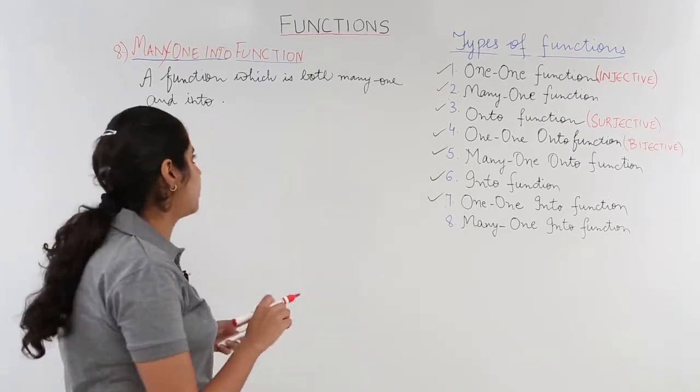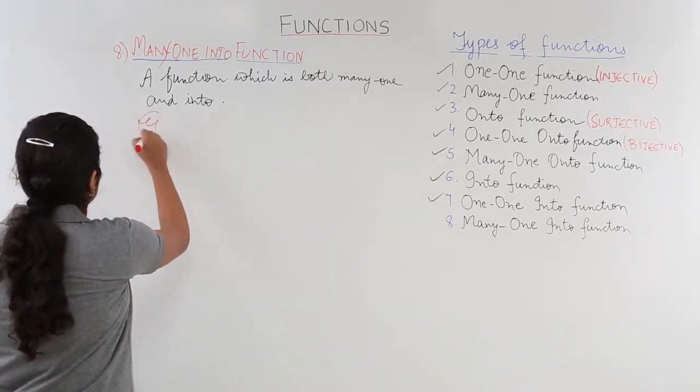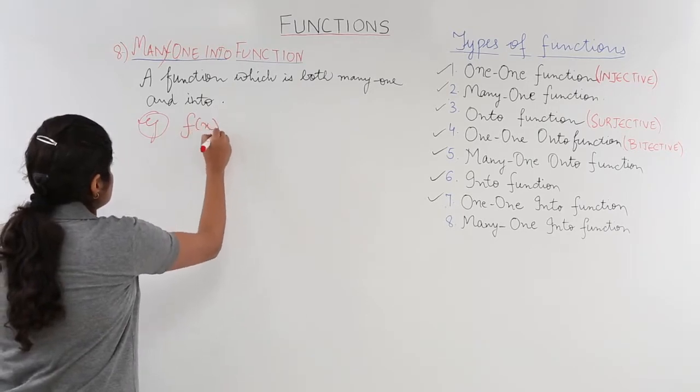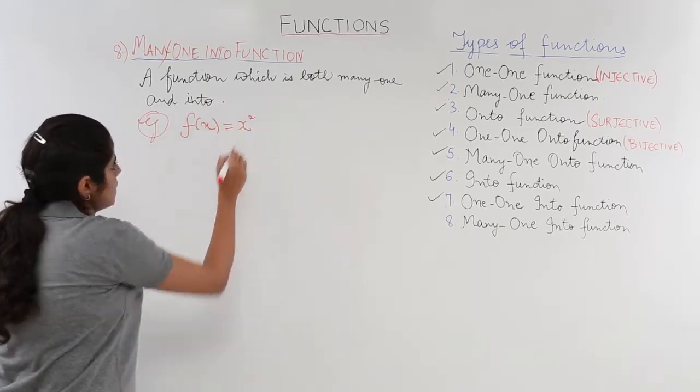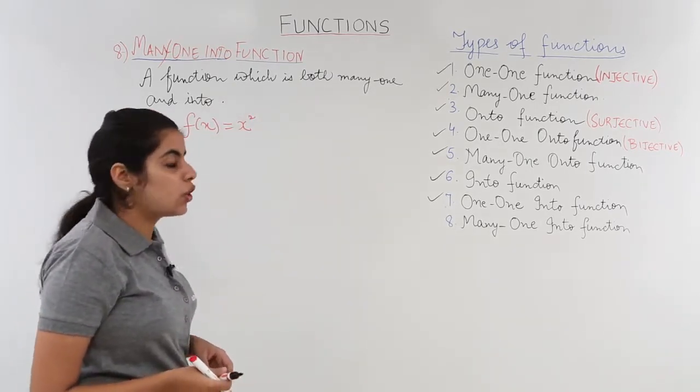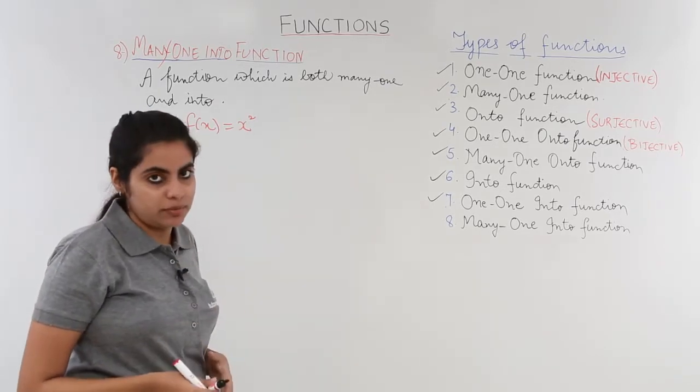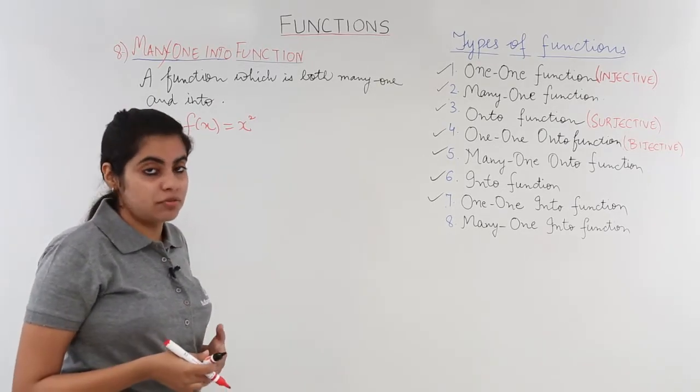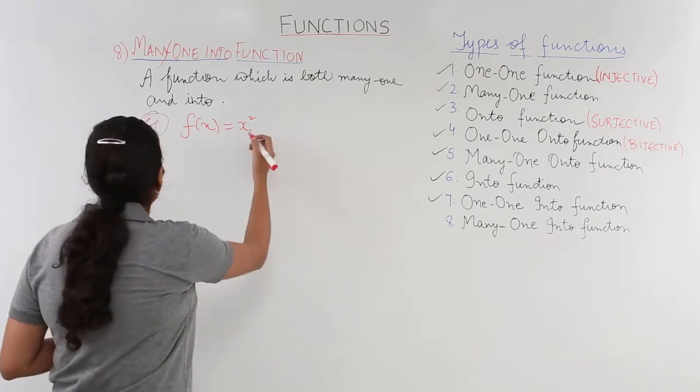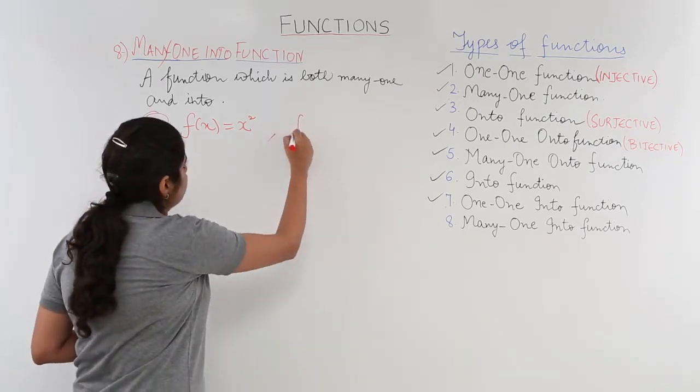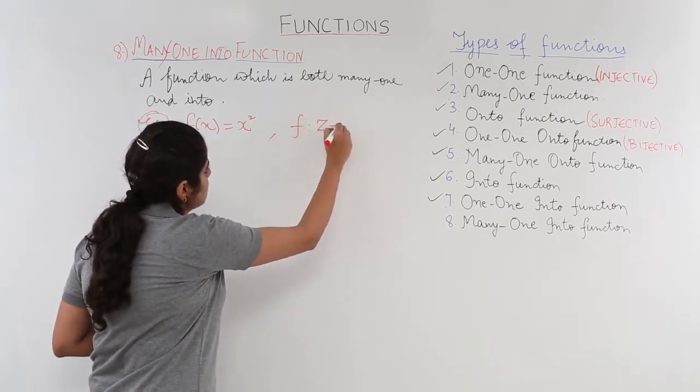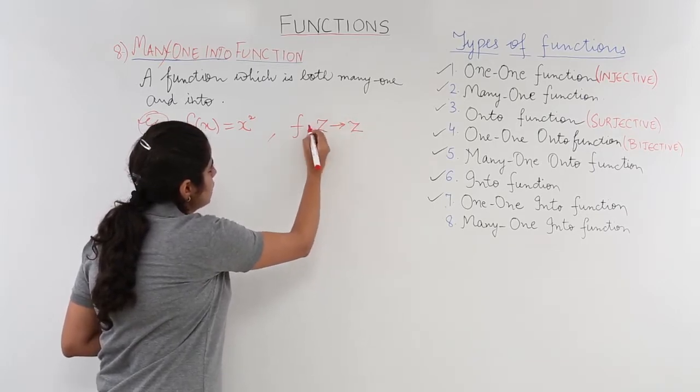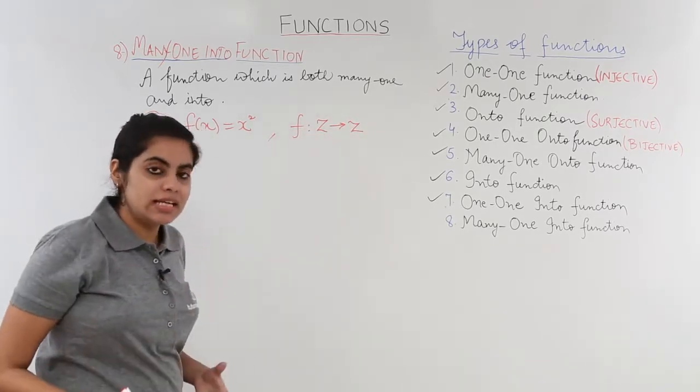Suppose I have a function called f(x) = x². That means it is a square function. Now this function is from integers to integers only. Z is integers.